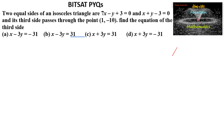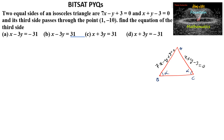Given two equal sides of an isosceles triangle: 7x minus y plus 3 is equal to 0, and x plus y minus 3 is equal to 0. We have the property that the third side of an isosceles triangle must be parallel to the angular bisector of the two equal sides.